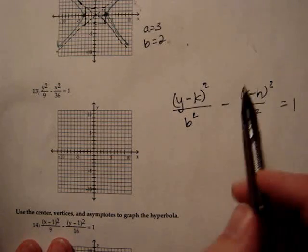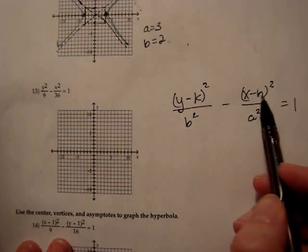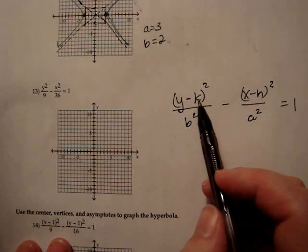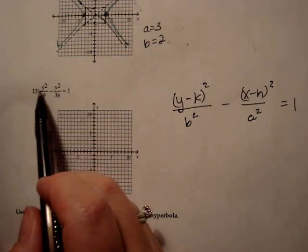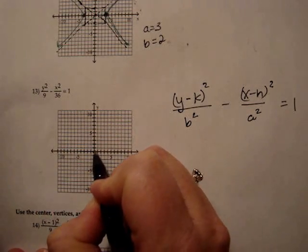So again, the center is at h and k, but don't forget, the h is from the x portion and the k is from the y portion. So on our example 13, again we're centered at 0, 0, there's my center.